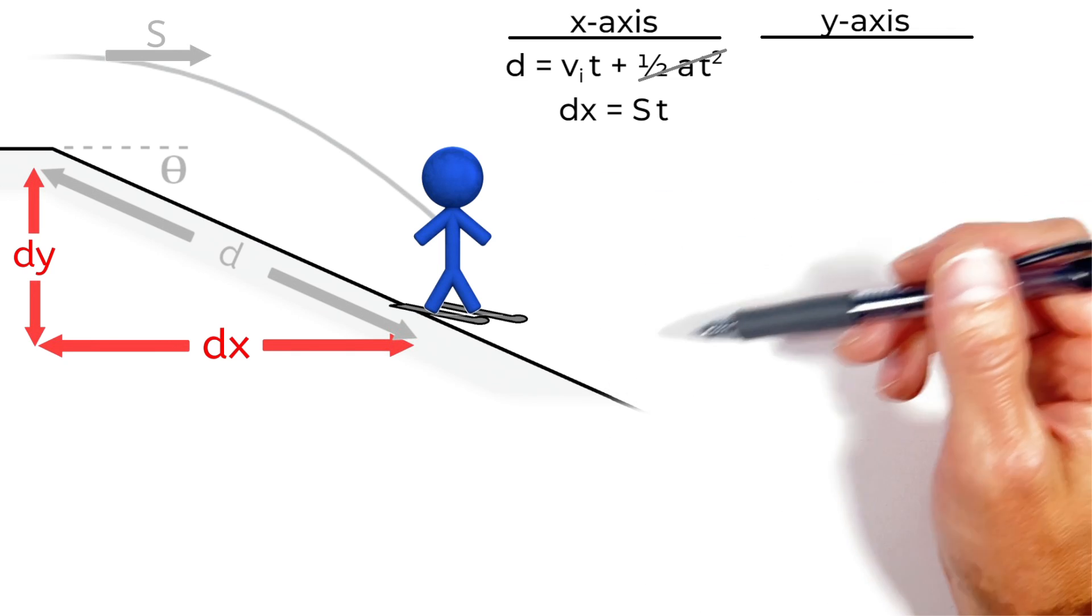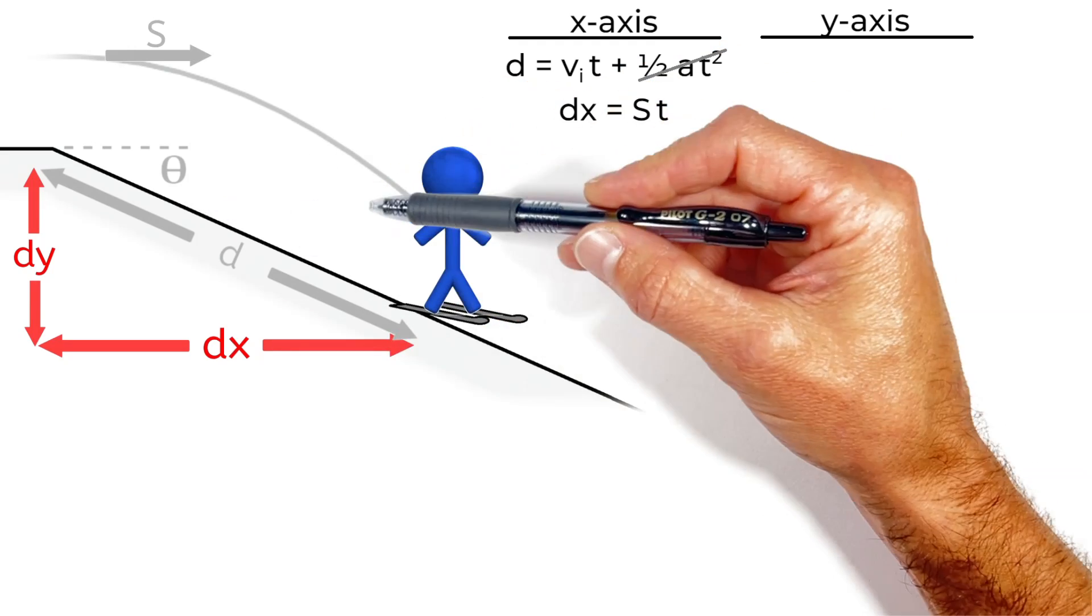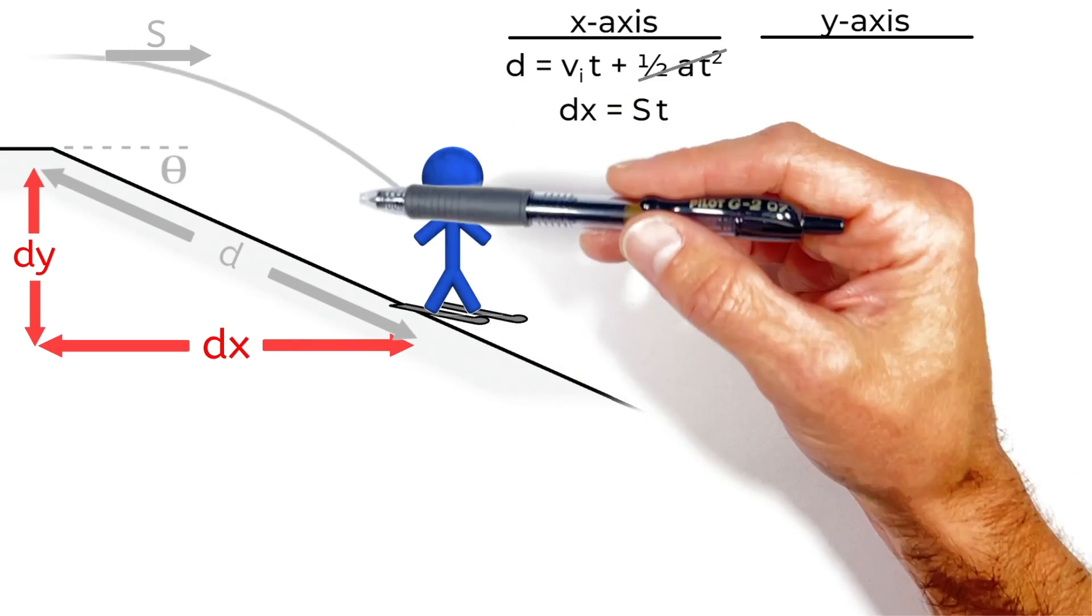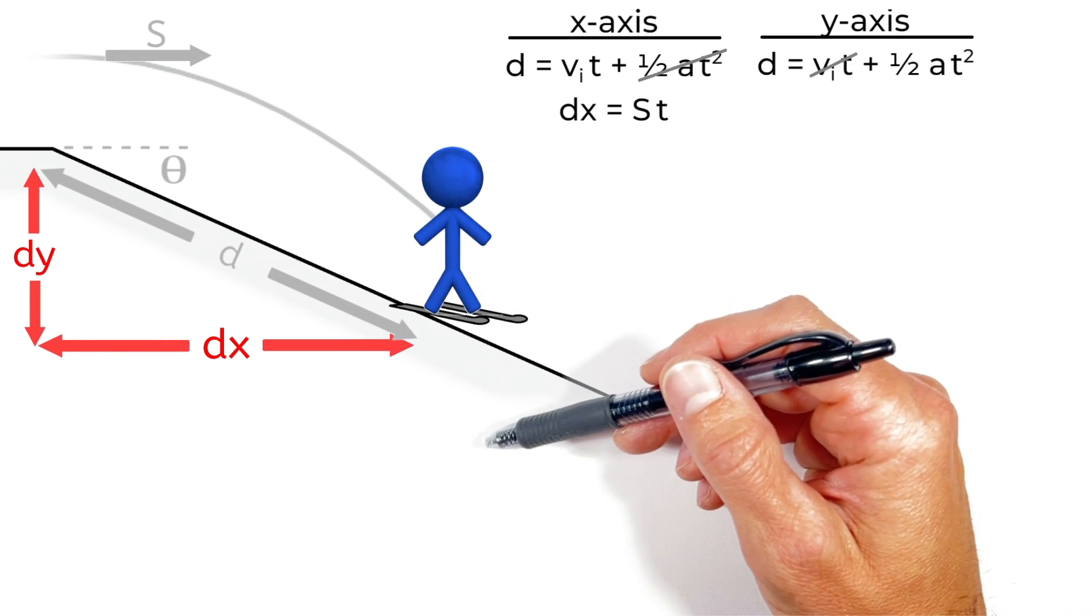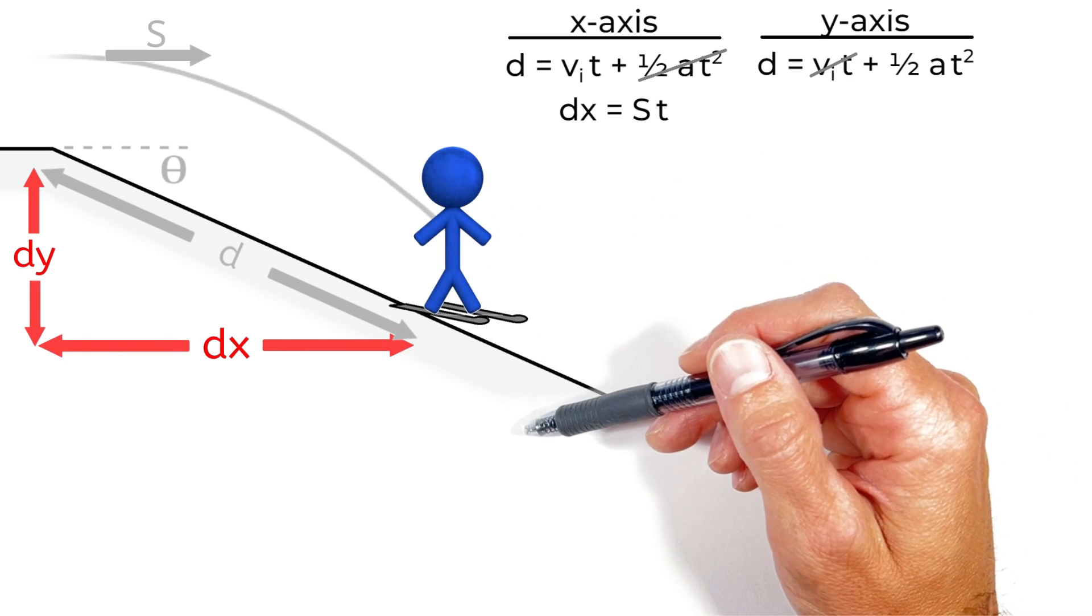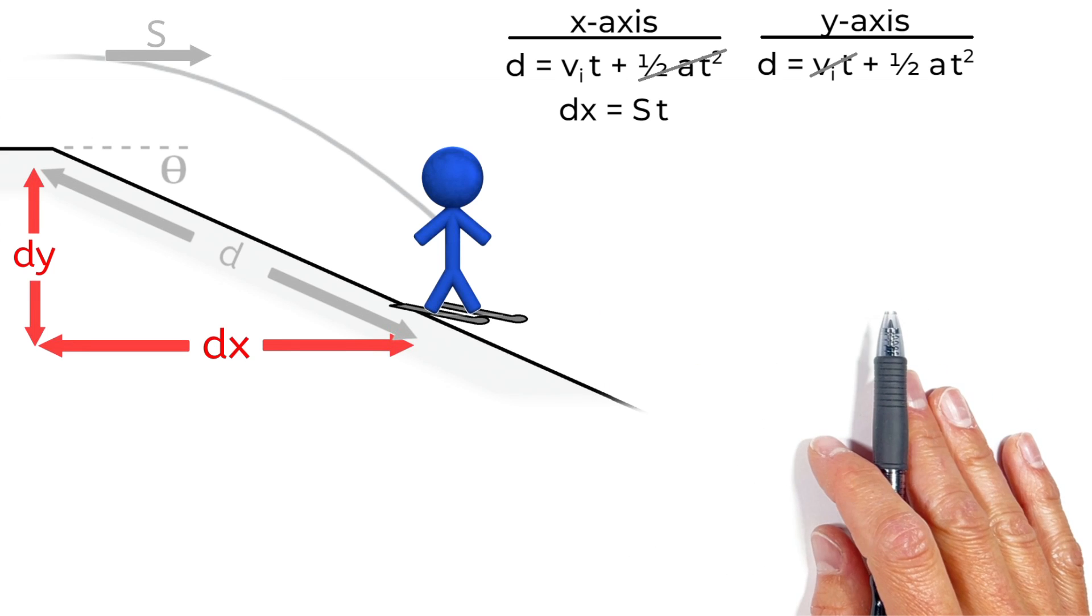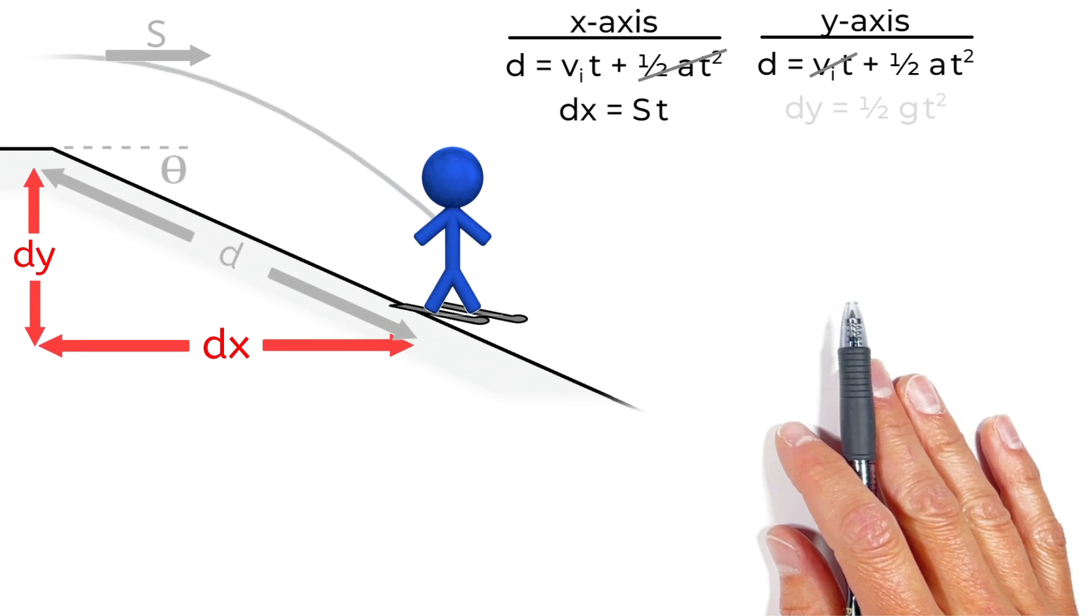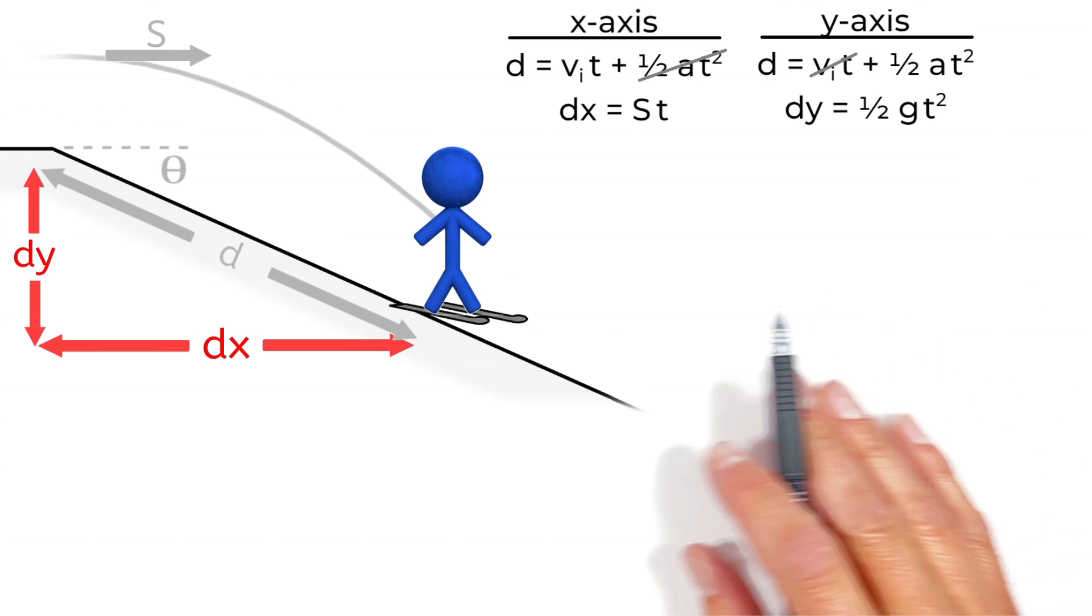Now in the y-axis we have a slightly more complicated situation because vertically the skier is going horizontally off this jump, which means their initial velocity is zero. But because they're in projectile motion or effectively free-fall in the y-axis, they're accelerating vertically. So looking in the y-axis, we can use the kinematic equations to find the displacement in the y-axis is one-half gt squared.